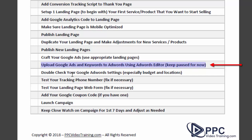Now upload your Google Ads and keywords to your Google Ads account, but keep them paused for now — you don't want them running quite yet. Next, double-check your ad settings: make sure you have the correct budget set up and the correct bidding settings — whether that's manual CPC with enhanced CPC checked, return on ad spend, or whatever you're using. Most importantly, double-check your locations. We often see accounts audited where they only want to target one state but are targeting the entire United States, which burns through budget on the wrong audience.